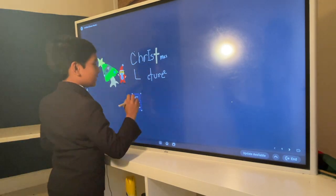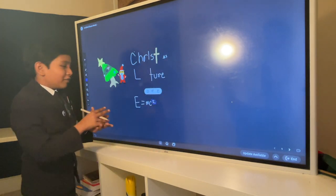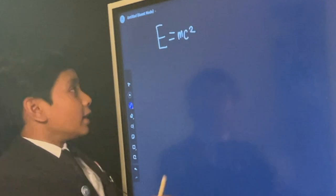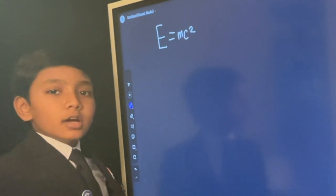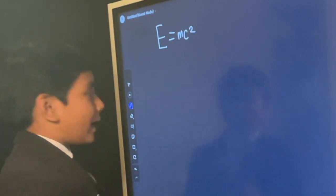Here comes the Christmas lecture! The world's youngest professor, Soborno Isaac Bari, who is known as God of Mathematics. So what about E equals MC squared? Well, to understand it, we have to go to its roots. Let's start with kinematics.